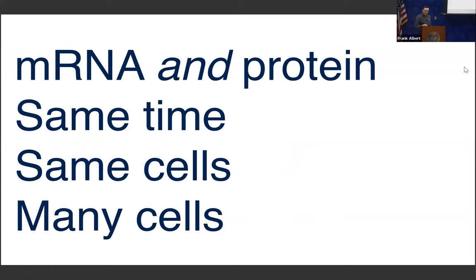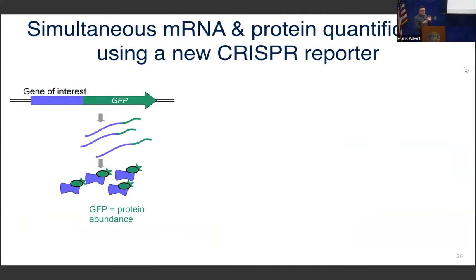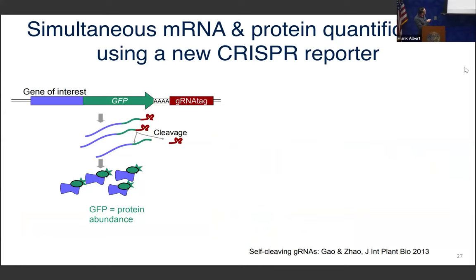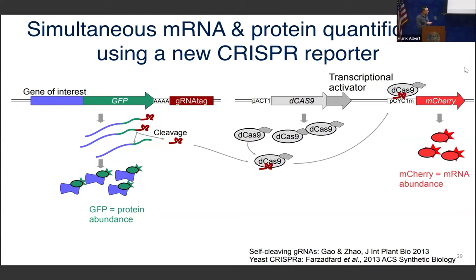This was a challenge that Christian Briand, a really great postdoc in the lab, set himself to tackle. He came up with a CRISPR-based reporter system. For protein abundance, it's still GFP. For RNA, the trick is a tag containing a guide RNA flanked by two ribozymes, such that upon transcription of the messenger RNA, the guide RNA cleaves itself out of the message, finds a deactivated Cas9 protein fused to a transcriptional activator, and is guided to a reporter gene — just mCherry, red fluorescence — driving its expression. So the idea is that green is protein, and in the same cell, red is a measure of RNA production for the same gene.